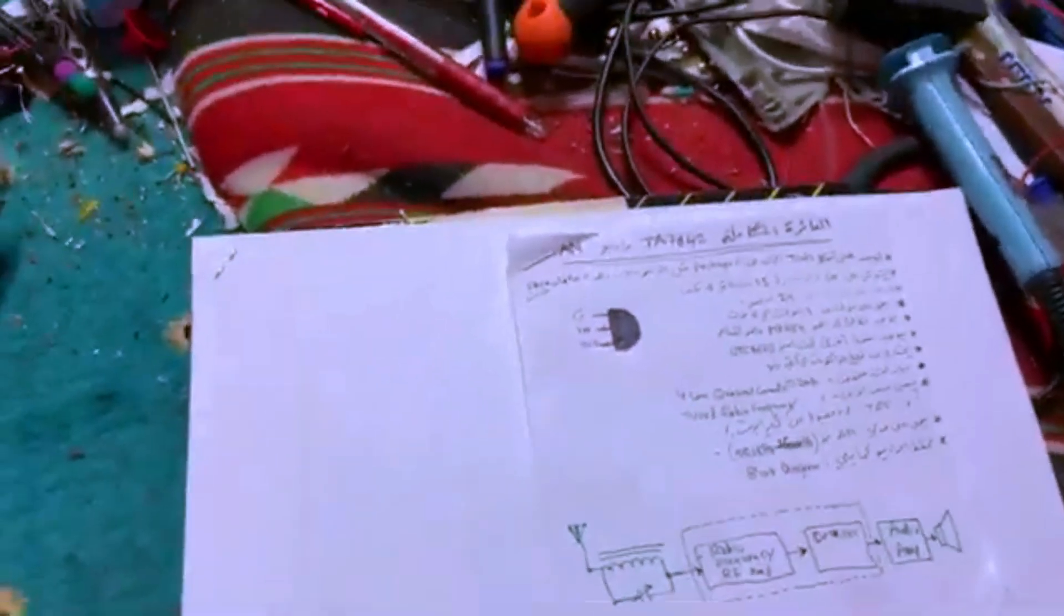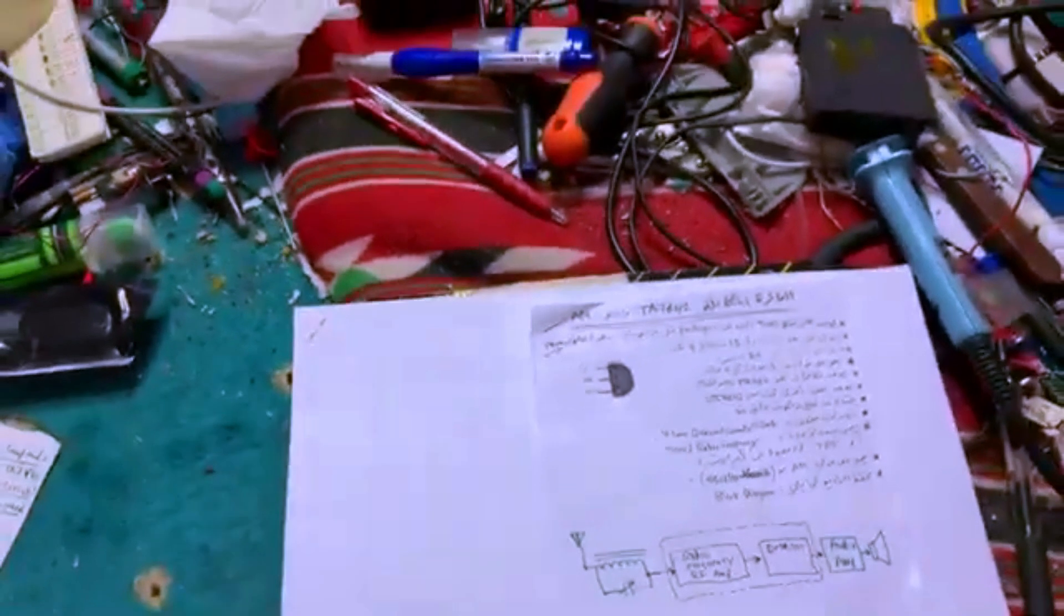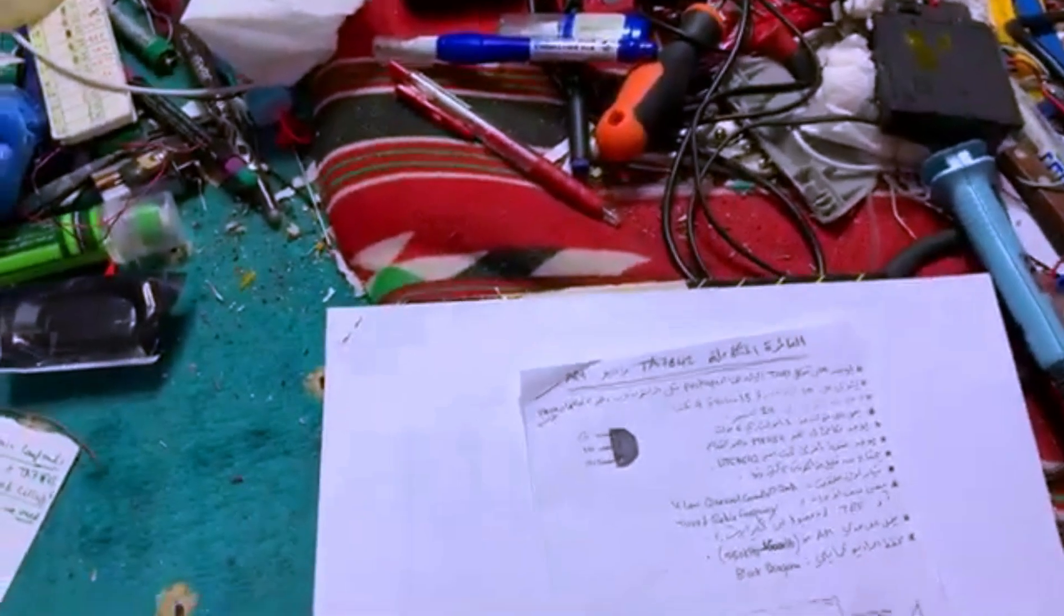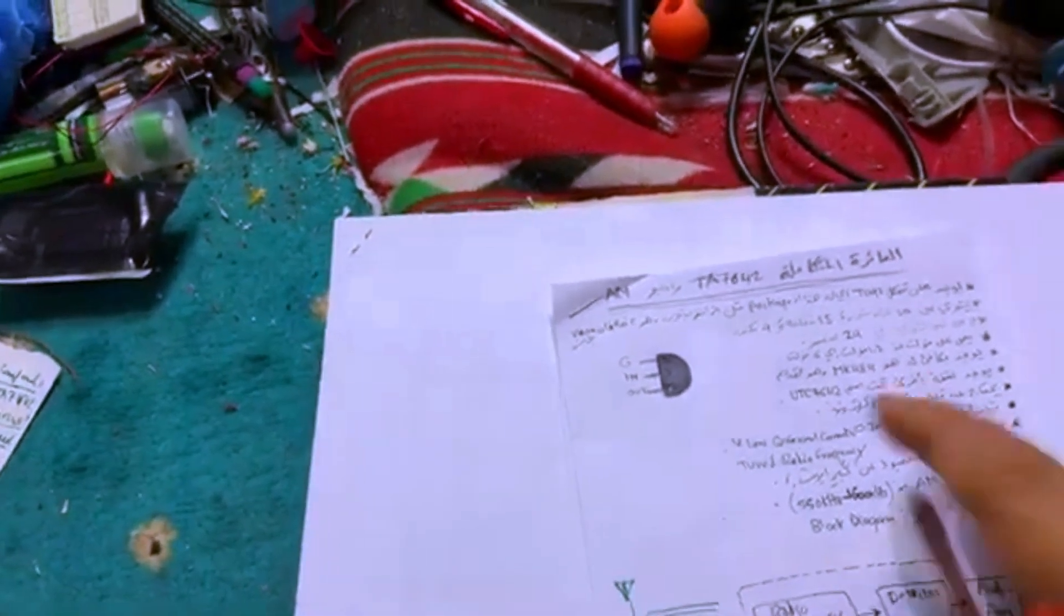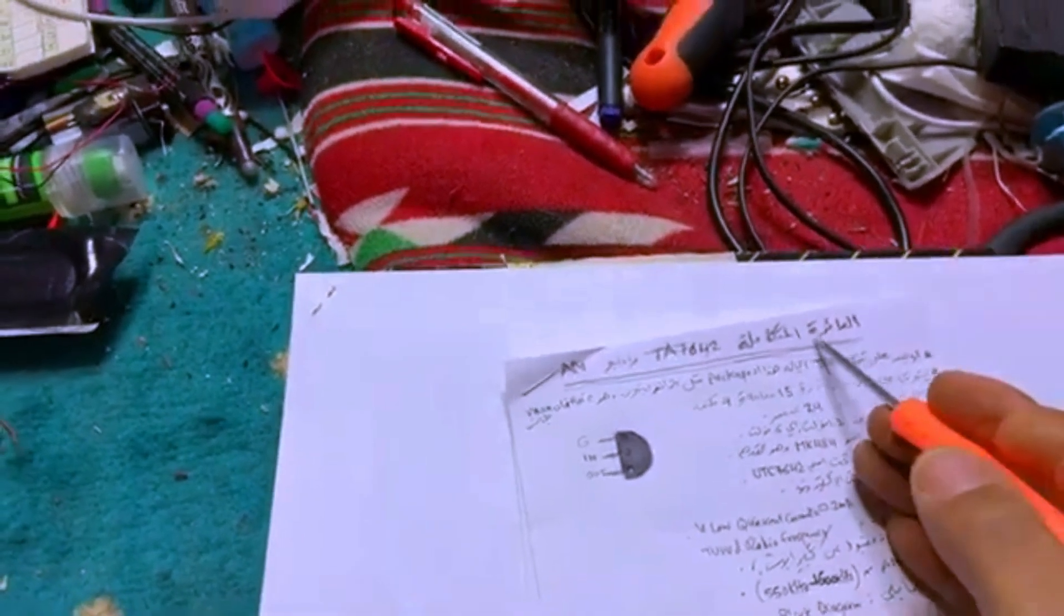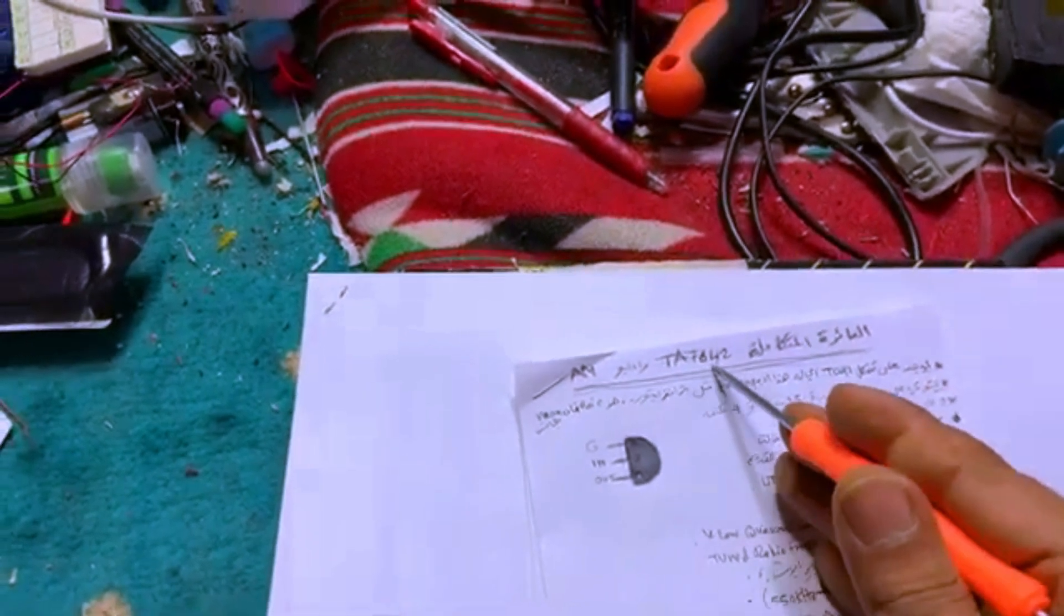So let's go ahead and translate it so that we can understand some information about this great circuit. Here it is, the IC TA7642 AM radio.